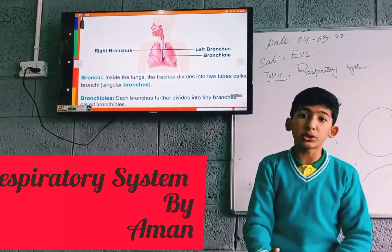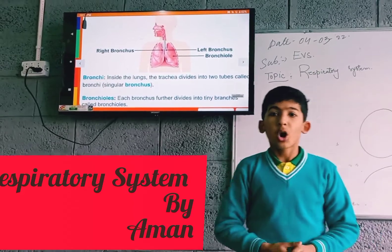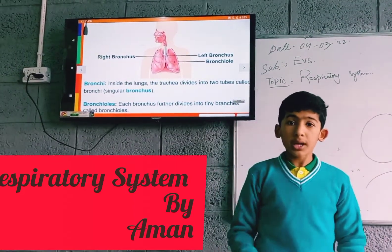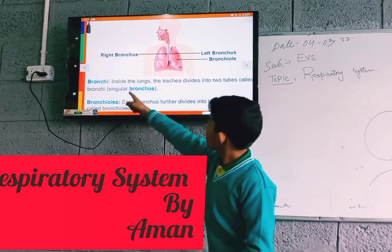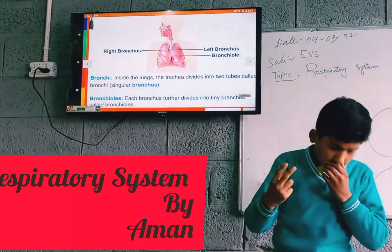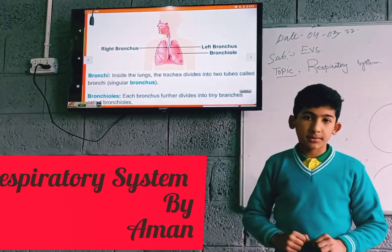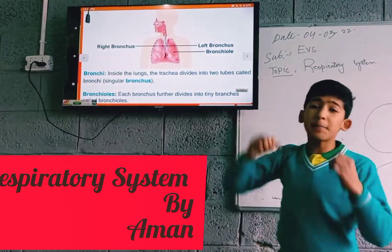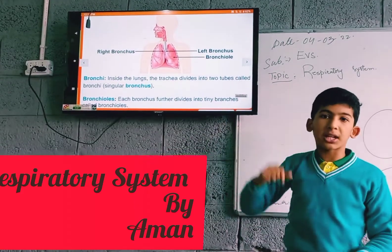The trachea is divided into two tubes called the bronchi — bronchus is singular, bronchi is plural. Inside the lungs, the trachea divides into two bronchi, and each bronchus is further divided into thinner branches called bronchioles, which are present in greater numbers inside the lungs.